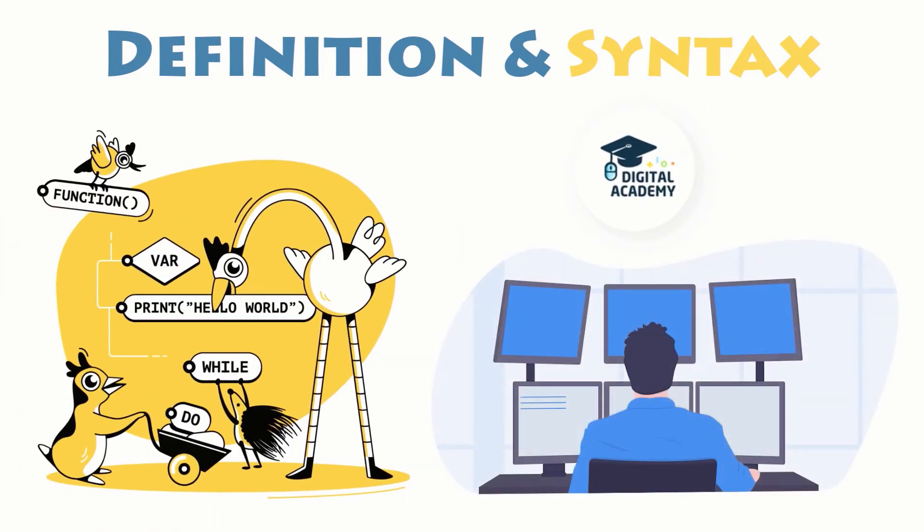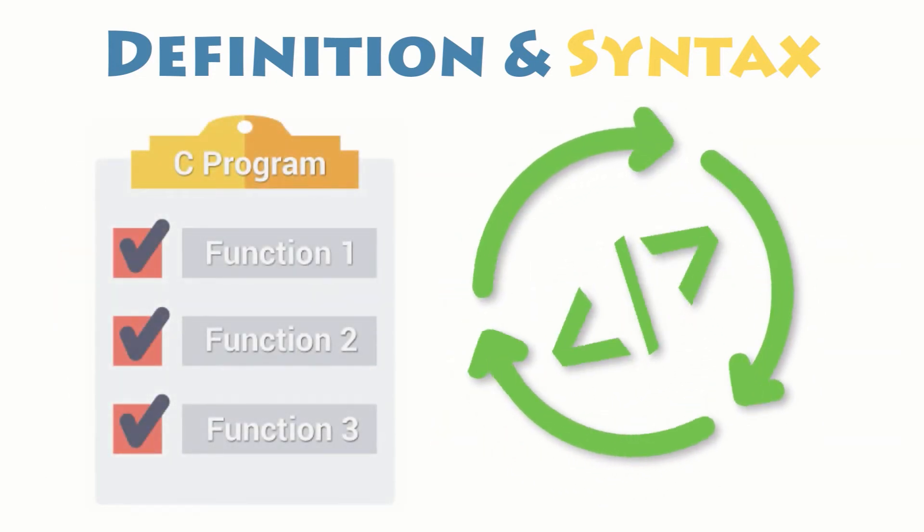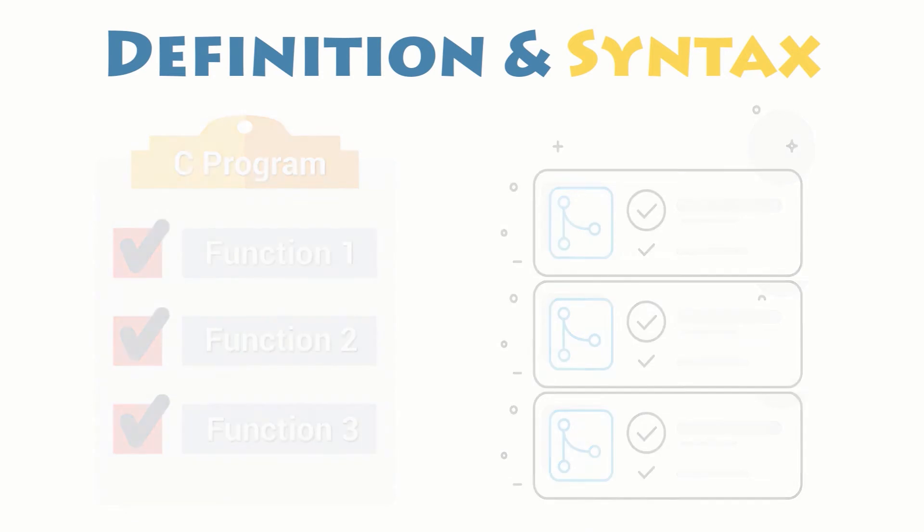Furthermore, it avoids repetition, makes the code reusable, and allows you to work collaboratively. Functions are the first step to code reuse. They allow you to define a reusable block of code that can be used repeatedly in your program.